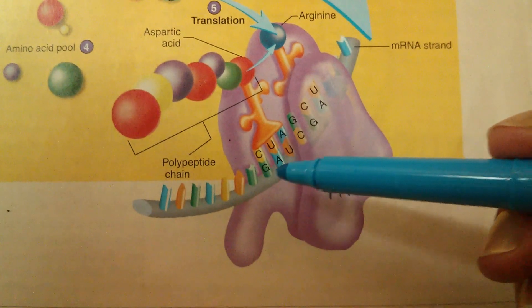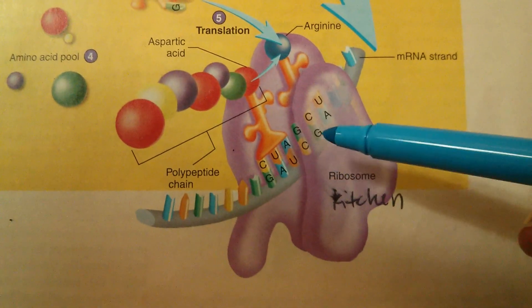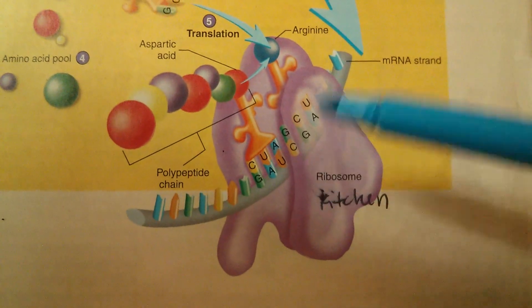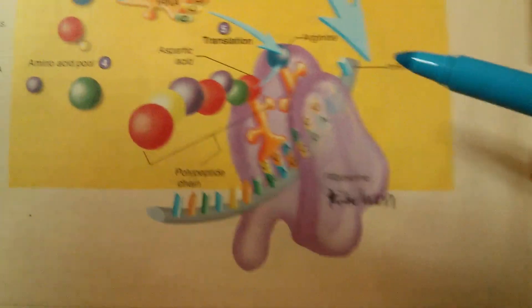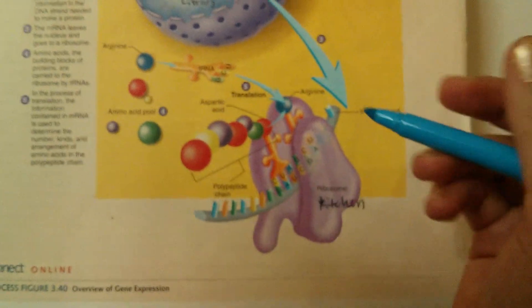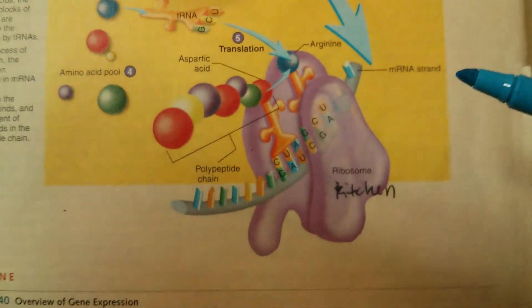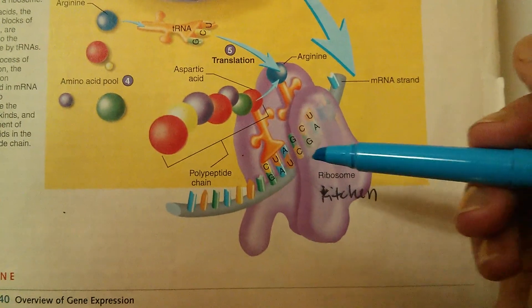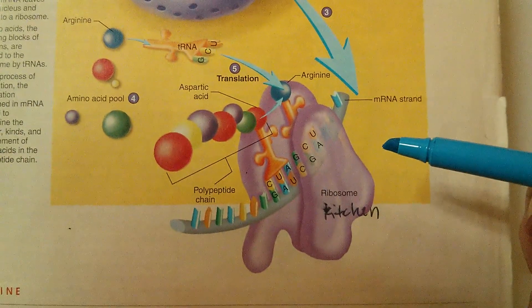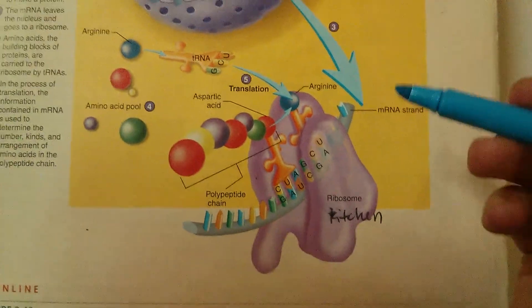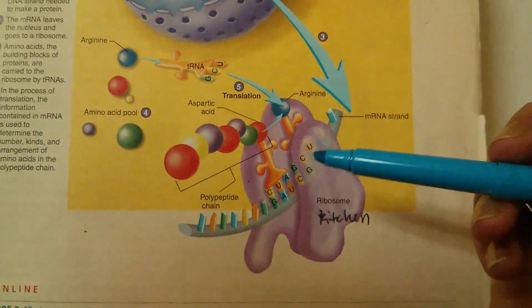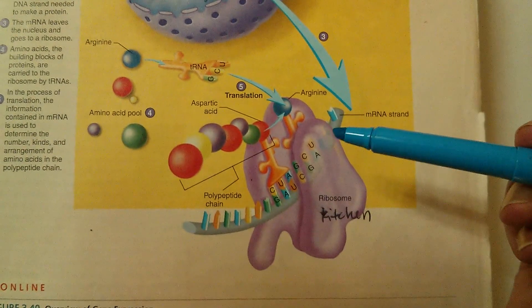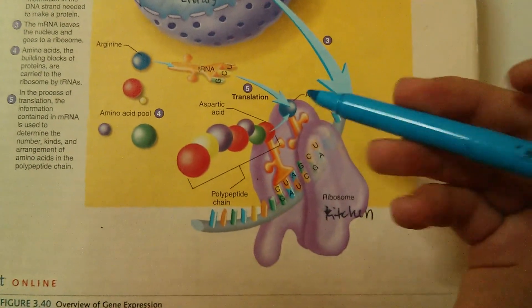In the same way to build a protein, you need certain ingredients. And so, this recipe here is a code, the G-A-U-C-G-A, is a code for what ingredients it needs to build its protein. And, if eggs, flour, sugar, and all that stuff is the ingredients or the building blocks of a cake, then amino acids are the building blocks of proteins. So, the ingredients that the ribosome needs to bake this protein are amino acids.